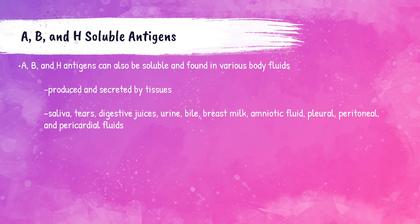A, B, and H antigens are on the surface of the red blood cell but can also be found in body secretions as soluble antigens — in saliva, digestive juices, urine, bile, breast milk, amniotic fluid, pleural fluid, pericardial fluid, and peritoneal fluid. This depends on two things: first, the patient's ABO inheritance — a B patient will only have B and H antigens in their secretions — and second, the patient's inheritance of secretor genes.